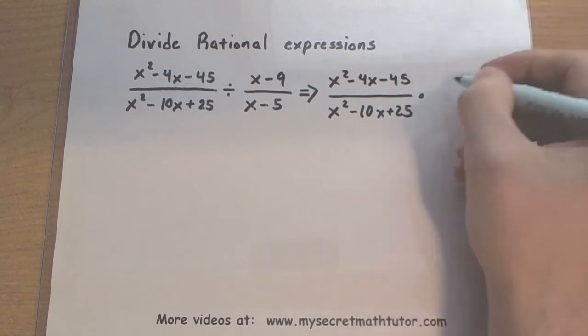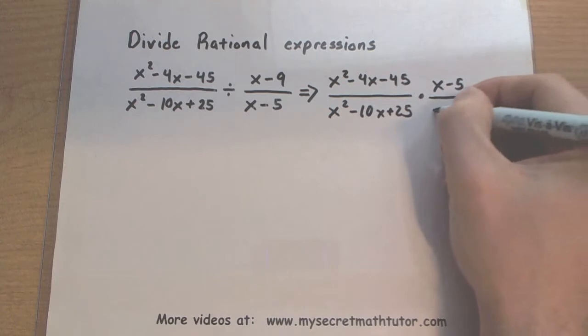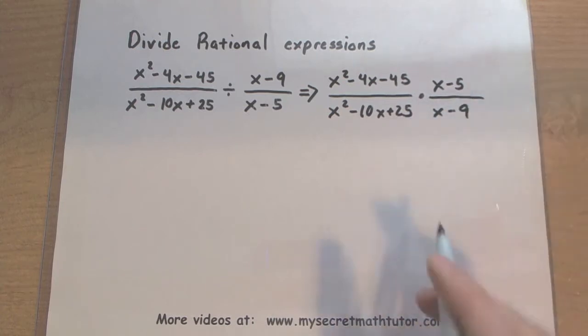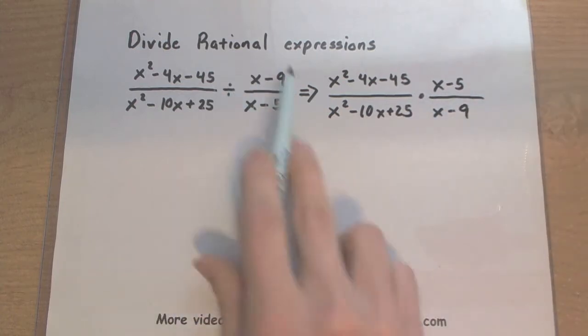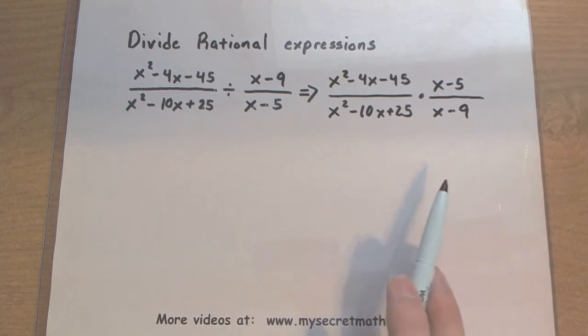And we're going to multiply this by x minus 5 over x minus 9. Notice how I've just taken that second fraction and turned it into the reciprocal. I've changed division into multiplication.